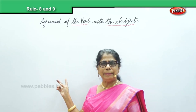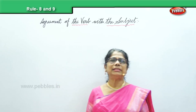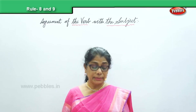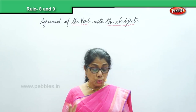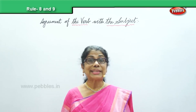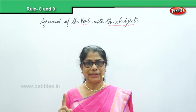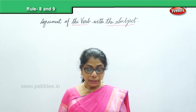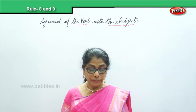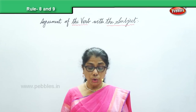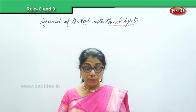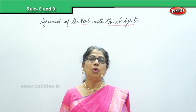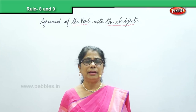In the verb agreement we have done seven rules. The eighth rule says: two or more singular subjects joined by or, nor, neither nor, either nor — the verb is always in the singular form.